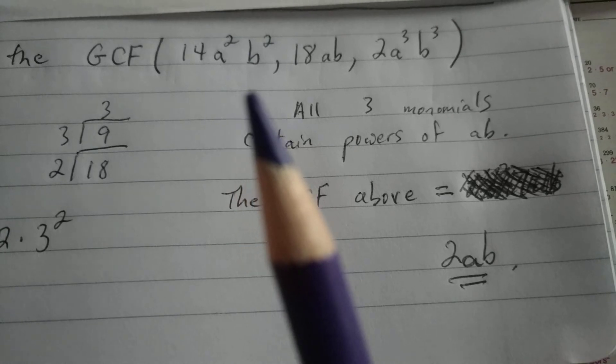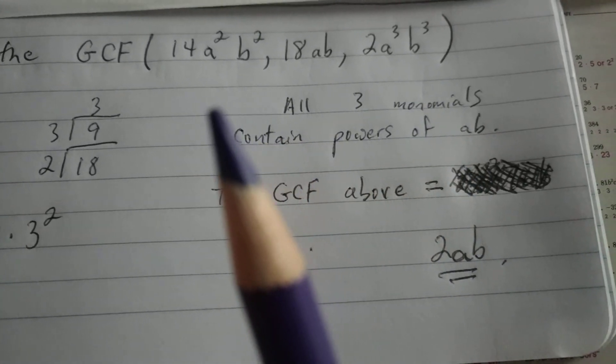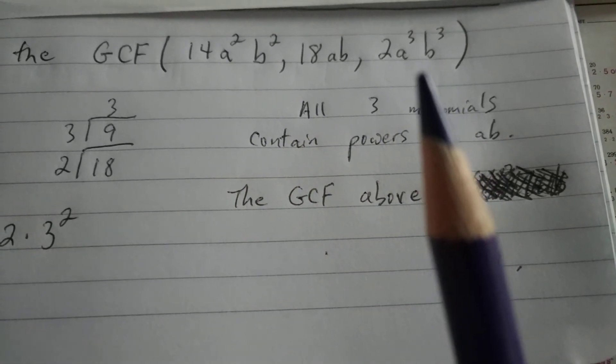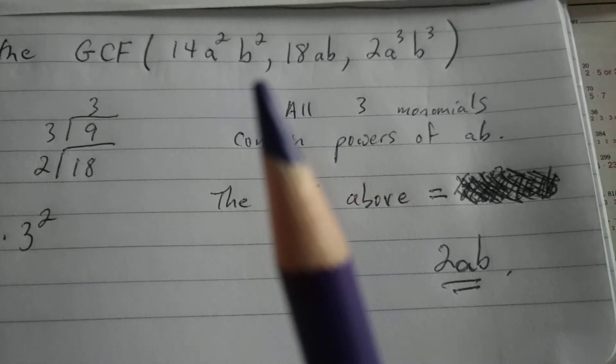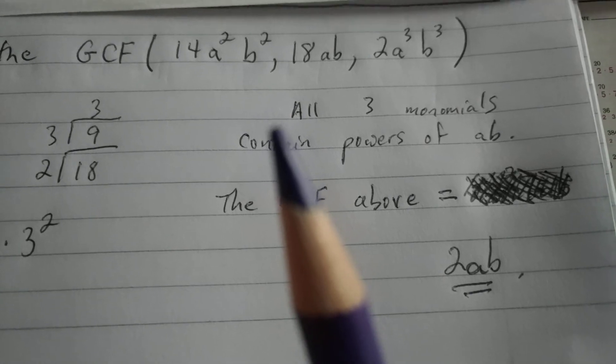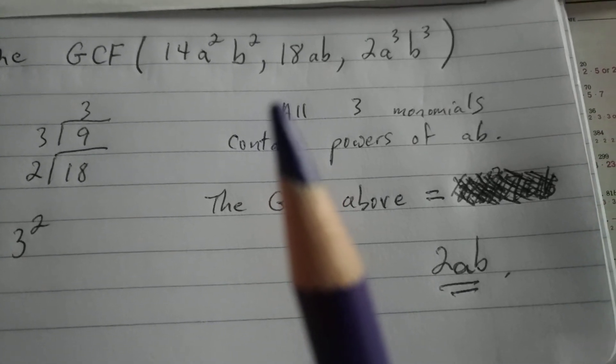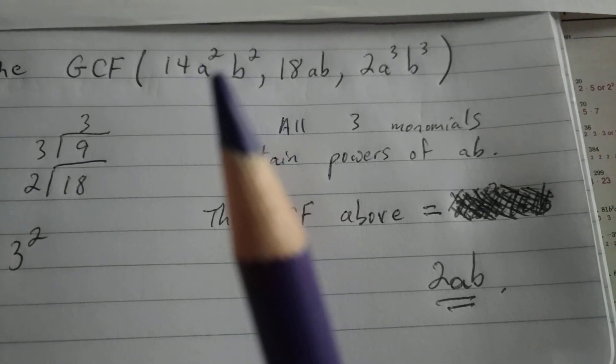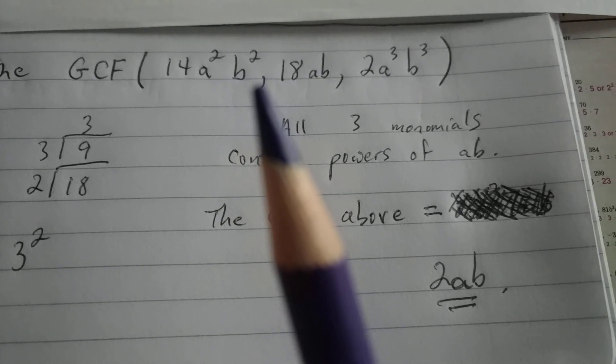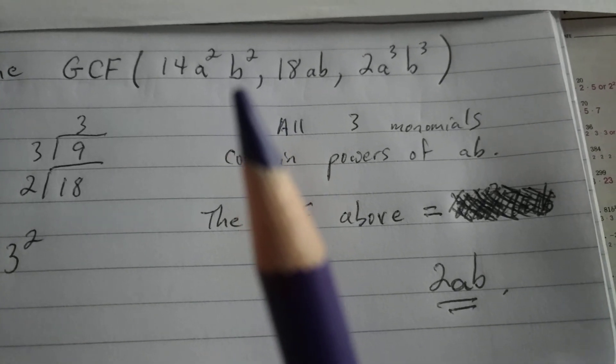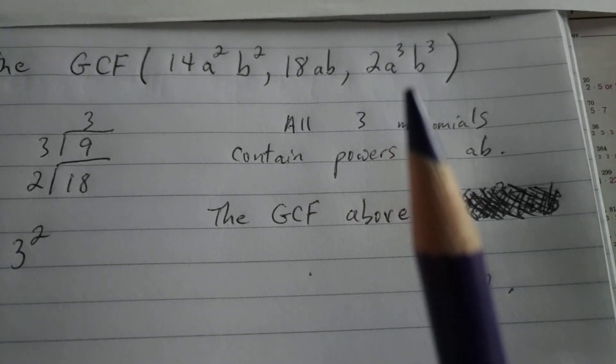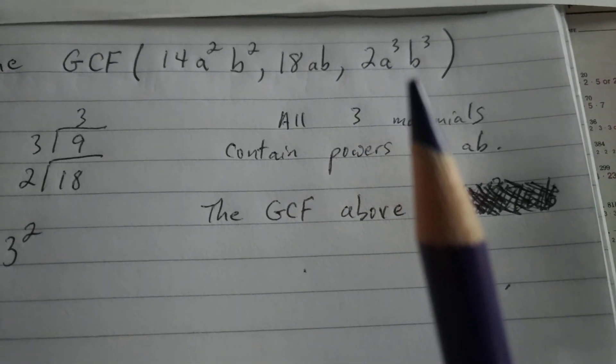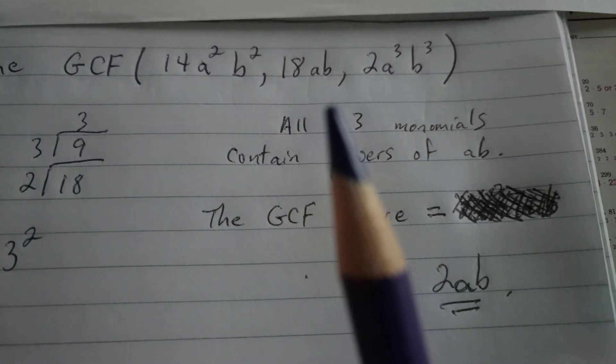Then we choose the common variables, so if either one of these three had not contained an a or a b, then the GCF would not include an a or a b. It has to be common. Then to be the greatest common, it can't be too large because while a²b² is a factor of itself, it is not a factor of ab. While a³b³ is a factor of itself, it's not a factor of a²b², or ab.